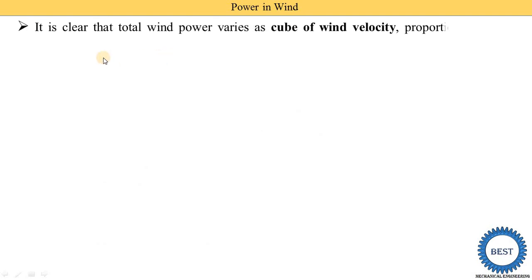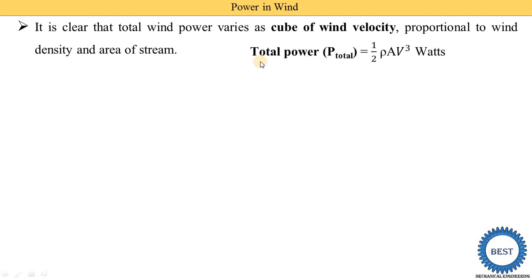It is clear that total wind power depends on the cube of wind velocity and is proportional to wind density and the area of the stream. The equation is: Total power = ½ρAV³. This total power depends on V³ and is also proportional to density ρ and area A.